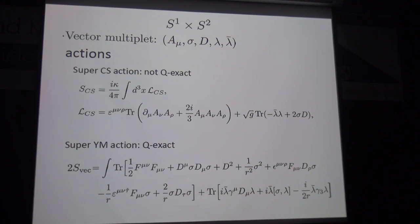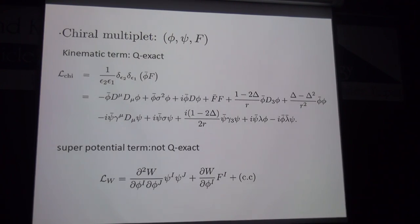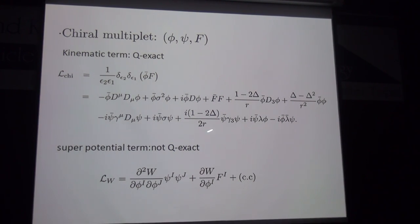The action consists of two parts: one is the supersymmetric Chern-Simons term, where κ is the Chern-Simons level — this is supersymmetric invariant but not Q-exact. The supersymmetric Yang-Mills action, on the other hand, is Q-exact, so in localization computation we can use it as the Q-exact deformation term. The other multiplet is the chiral multiplet, consisting of complex scalars, Dirac fermions, and complex auxiliary fields. The kinetic action of the chiral multiplet is also Q-exact, so we can use this Lagrangian as a Q-exact term in localization.